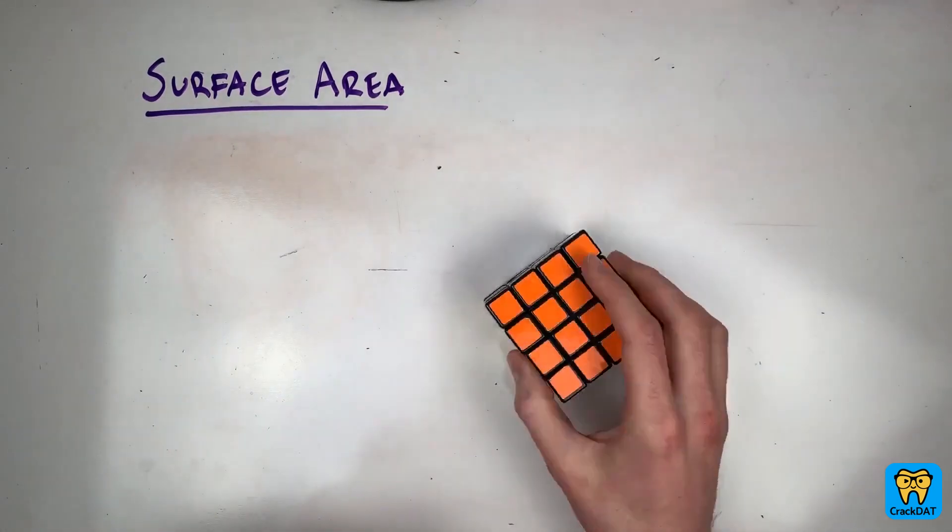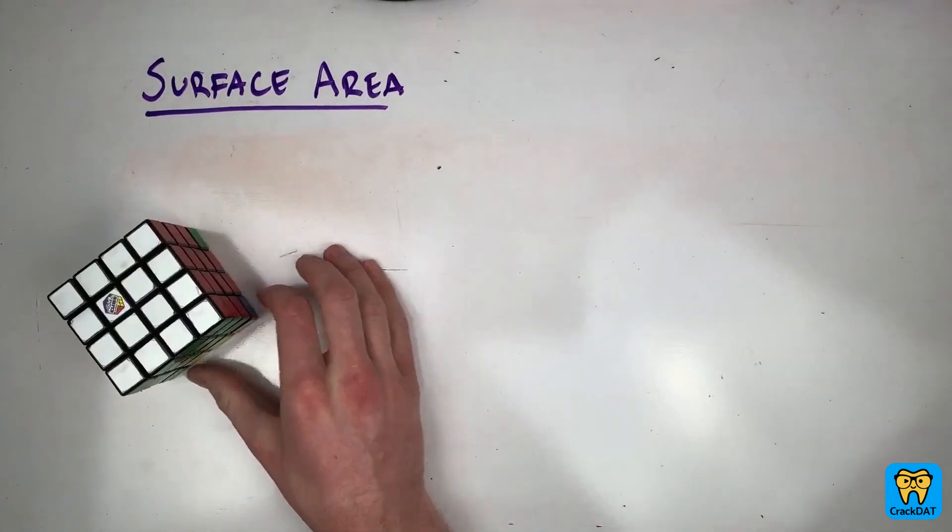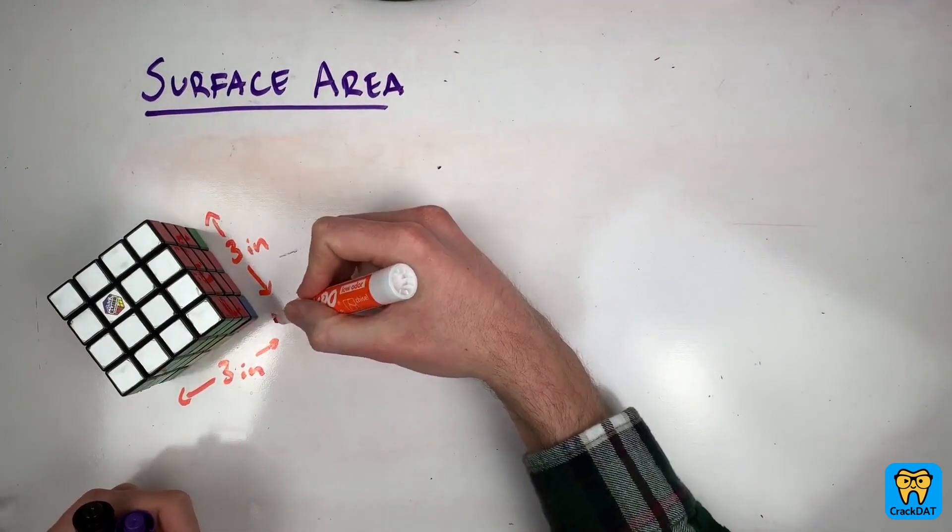So for example, take this cube. Remember, a cube has a length, width, and height that are all the same.